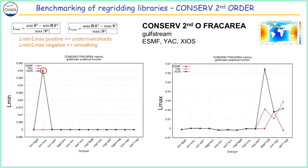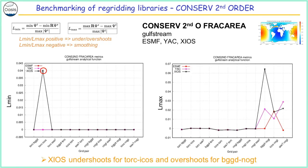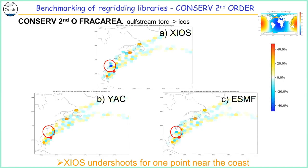We also discovered some overshooting for XIOS for the second order conservation — something is happening on the coast. If you are interested, we can give more details about the detailed results.